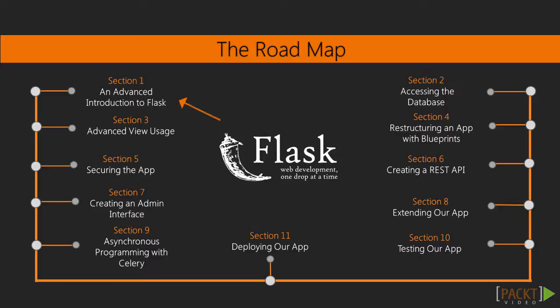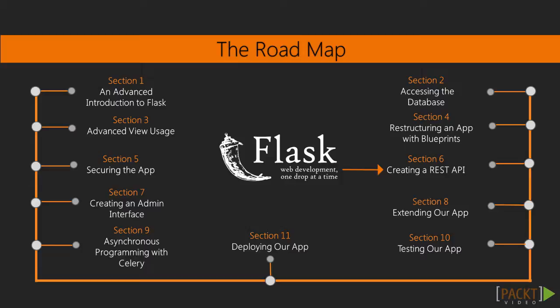In this course, we will cover these topics. In the first section, we will set up some necessary utilities and boilerplate code for the rest of the course. In the second section, we will look at how to access the database with the necessary concepts required. The third section will cover the advanced features of Flask to display the various relationships to the end user. The fourth one will see us restructuring our app using Flask Blueprints. In the fifth one, we will make our app more secure by adding login functionality and permissions. We will then create a RESTful API of our app in the sixth section. In the seventh one, we will create an admin interface and enhance the functionality of our app. We will then use Flask extensions to speed up the working of our app in the eighth section.